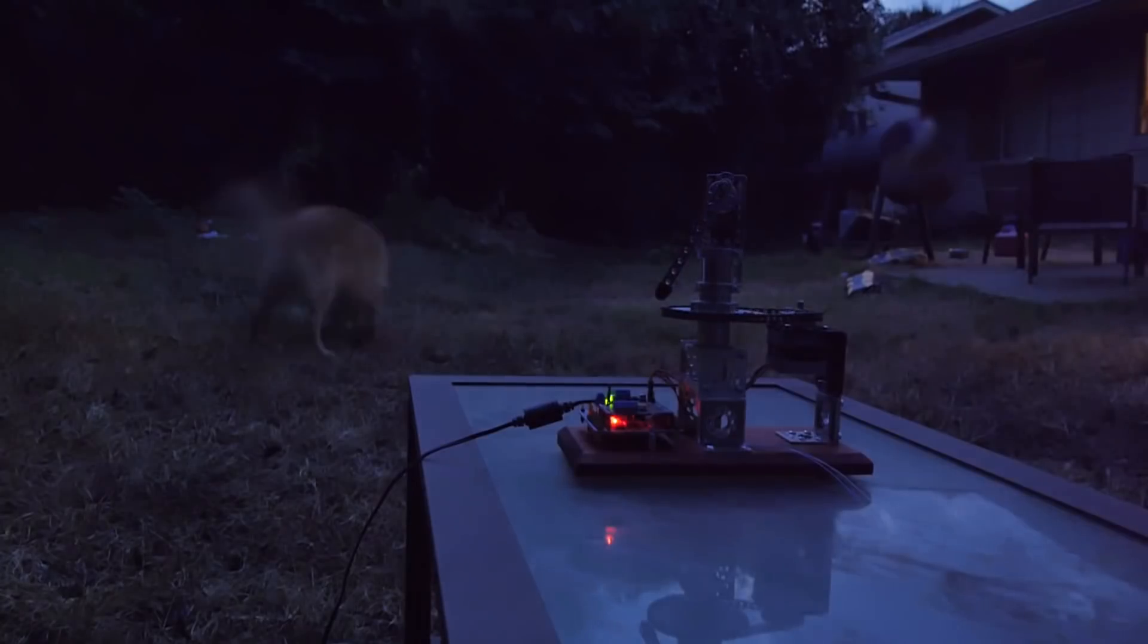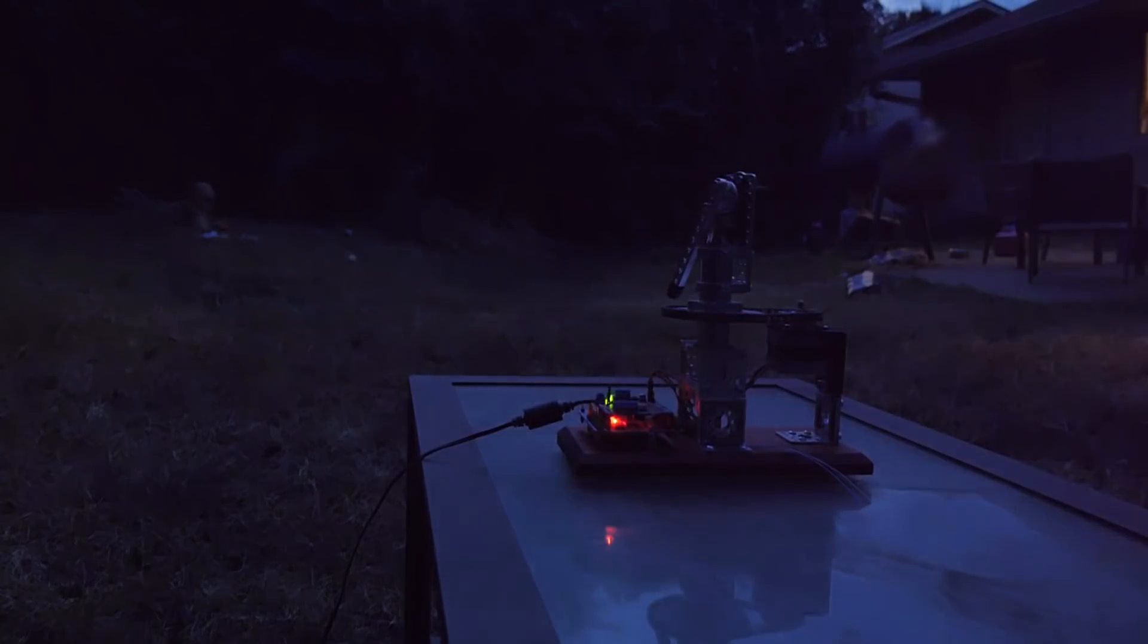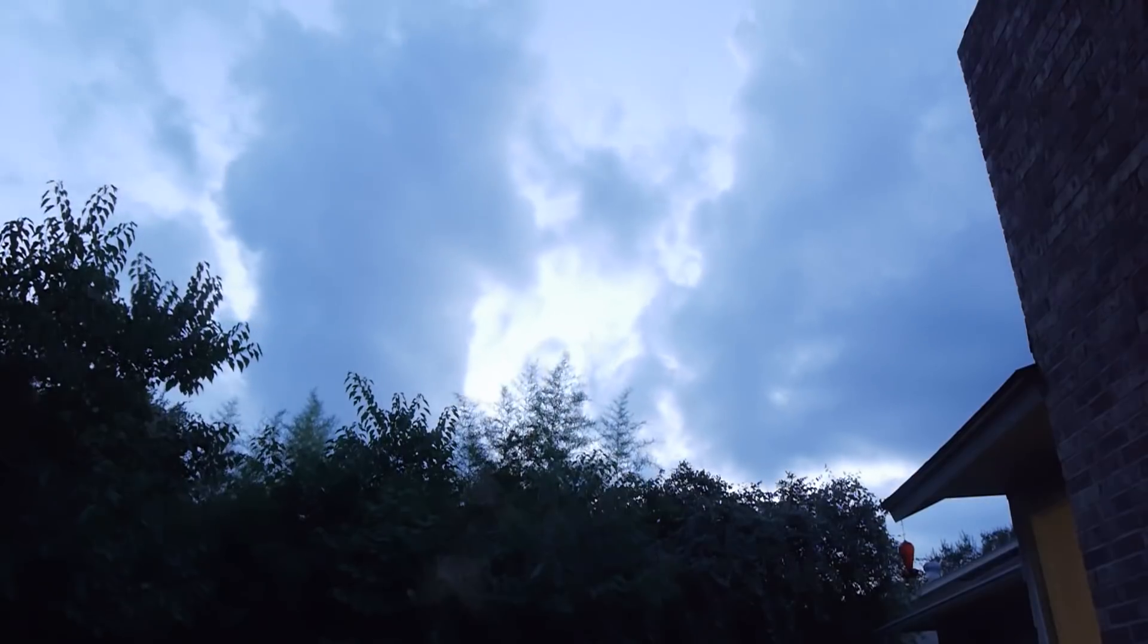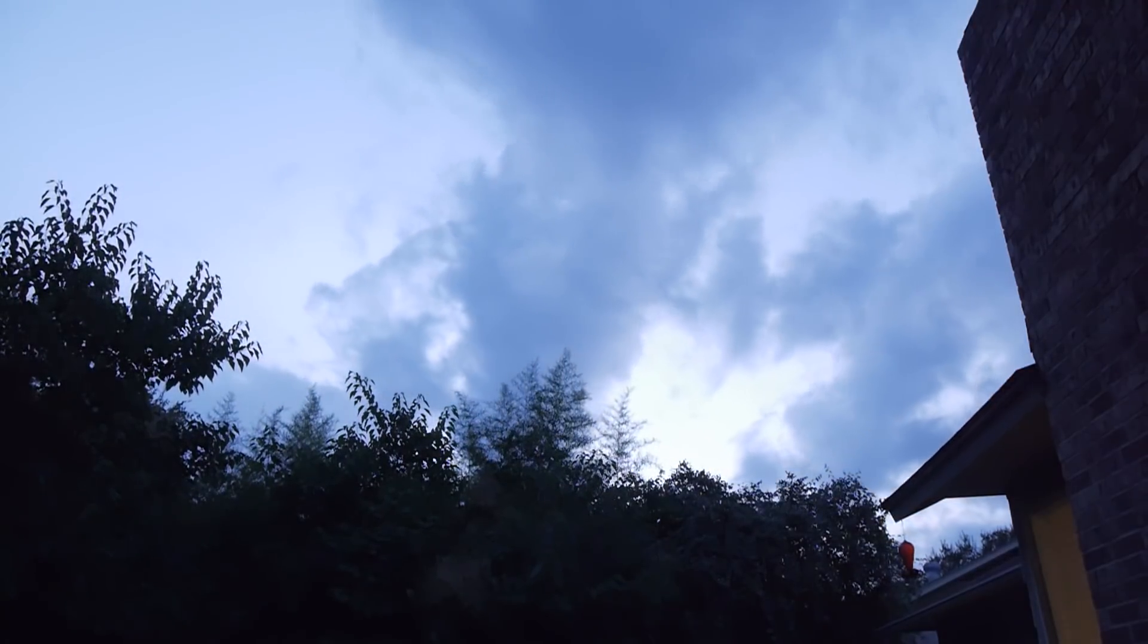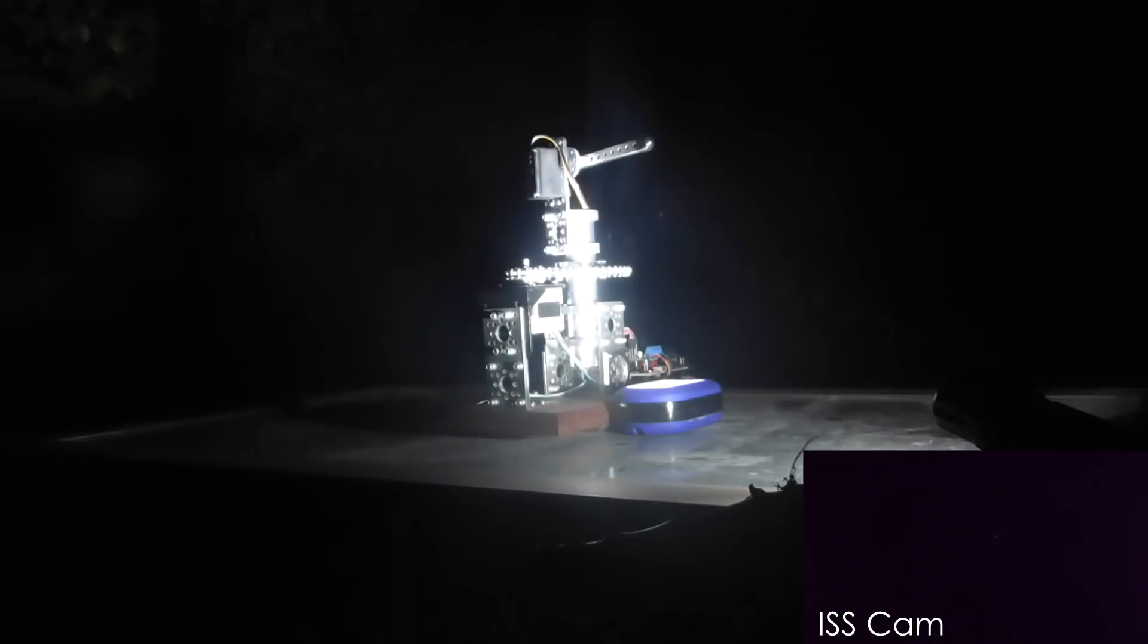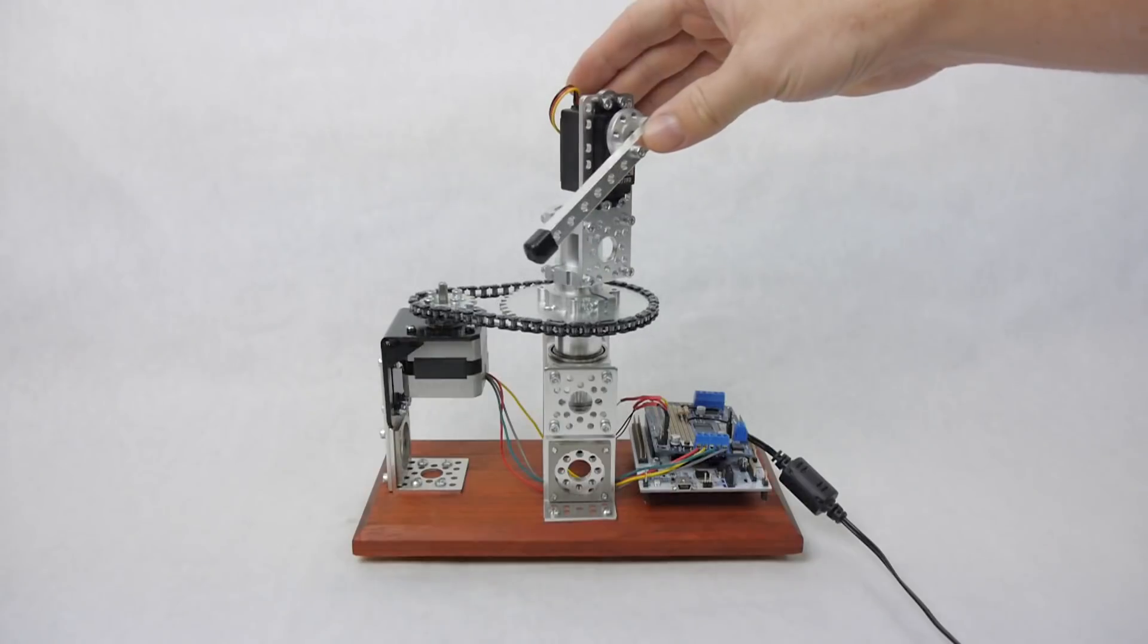I literally finished coding the tracker about an hour before the transit, so I hurriedly brought everything outside to get set up. The clouds parted just in time, and the tracker worked flawlessly, pointing directly at the ISS as it passed over. Such a great feeling to see it all come together and work perfectly the first time. And here's a quick demo in better light conditions.